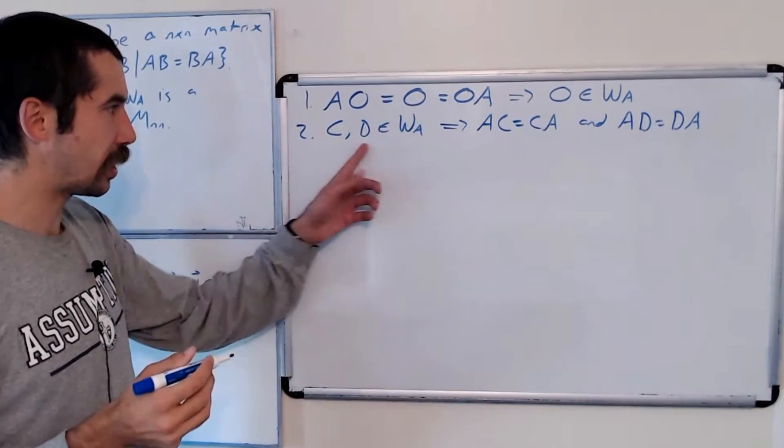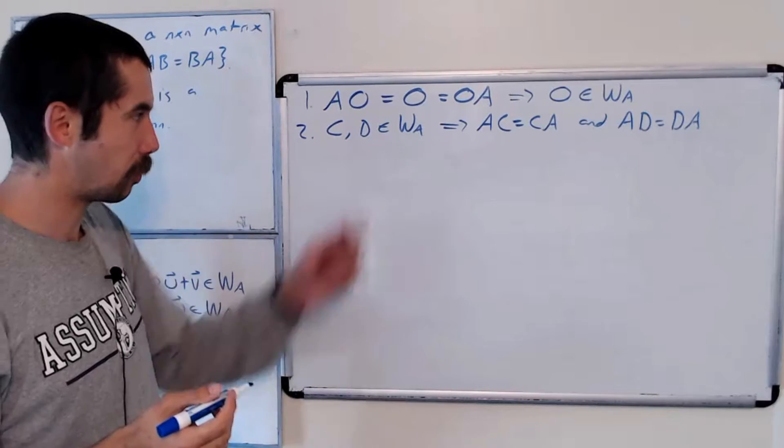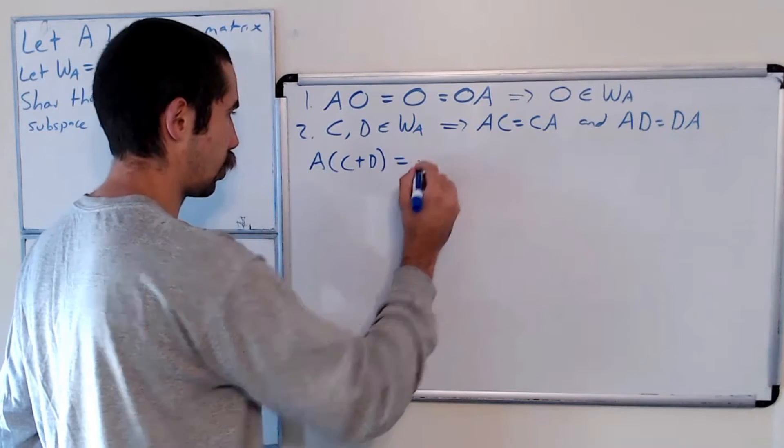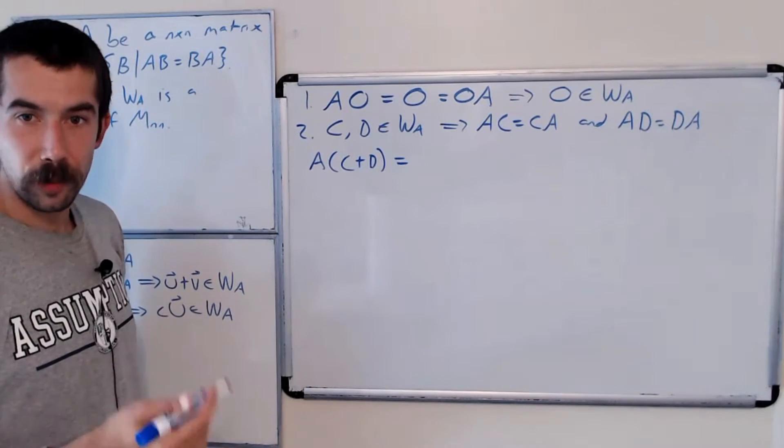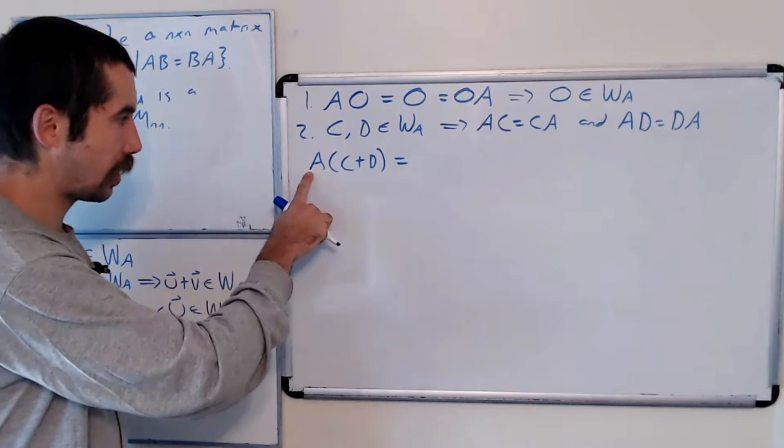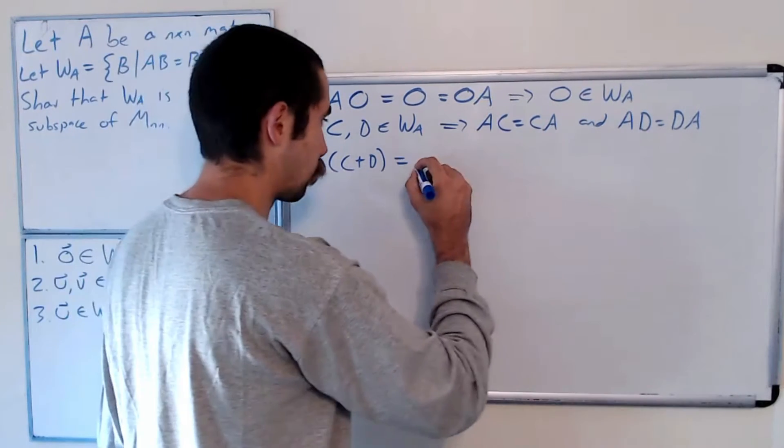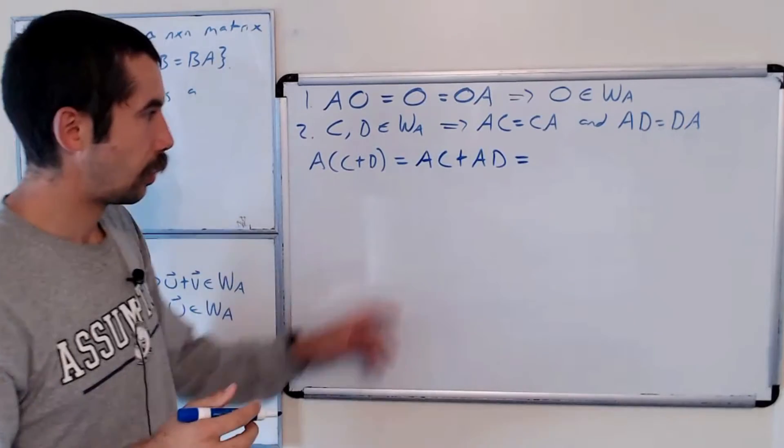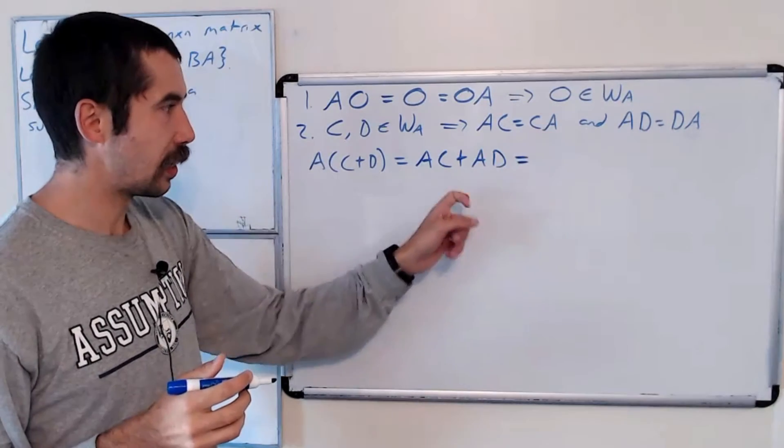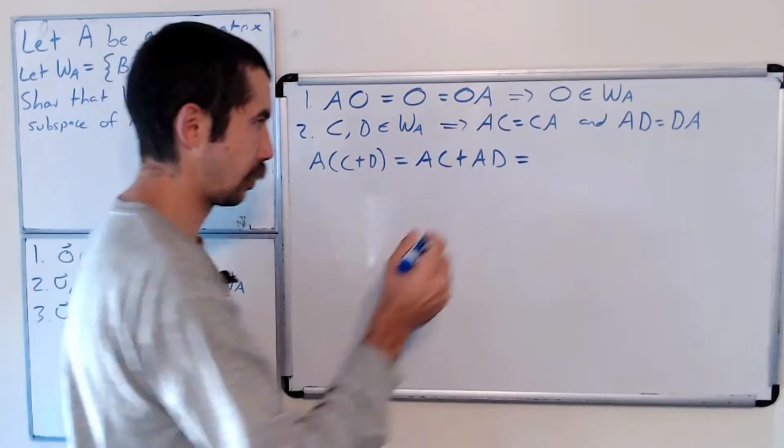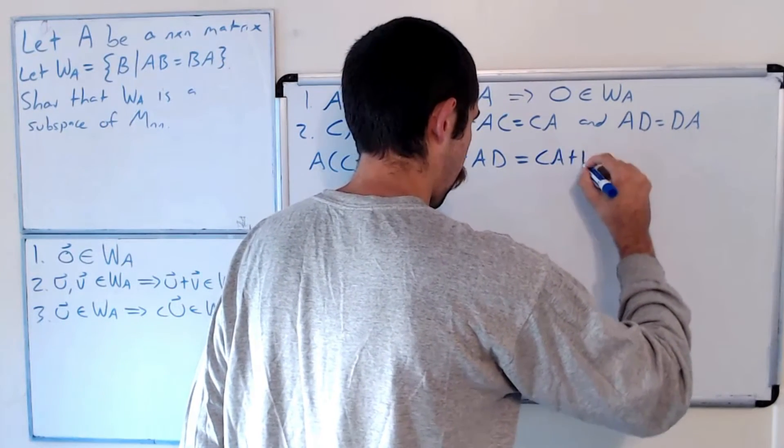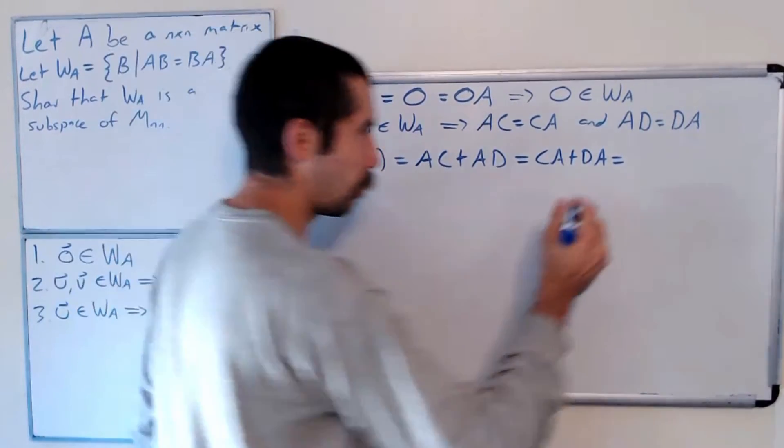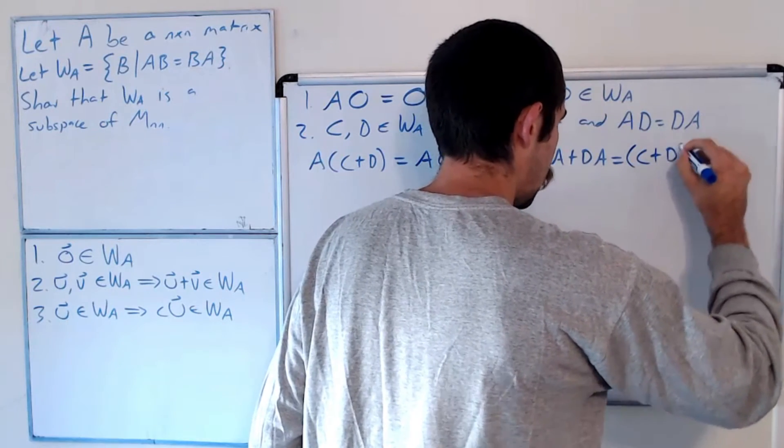And we want to show that the sum of these two matrices also commutes with A. So let's take a look at what A times C plus D is. Using properties of matrix multiplication, we know that this is A times C plus A times D. But we know AC is equal to CA, and AD is equal to DA.